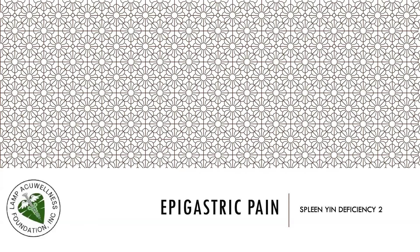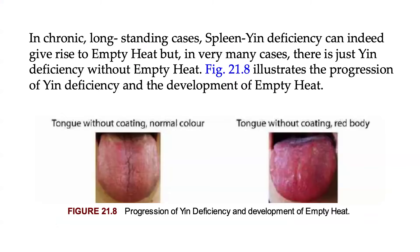We continue discussing epigastric pain due to spleen EIN deficiency. In chronic long-standing cases, spleen EIN deficiency can indeed give rise to empty heat, but in very many cases there is just EIN deficiency without empty heat.